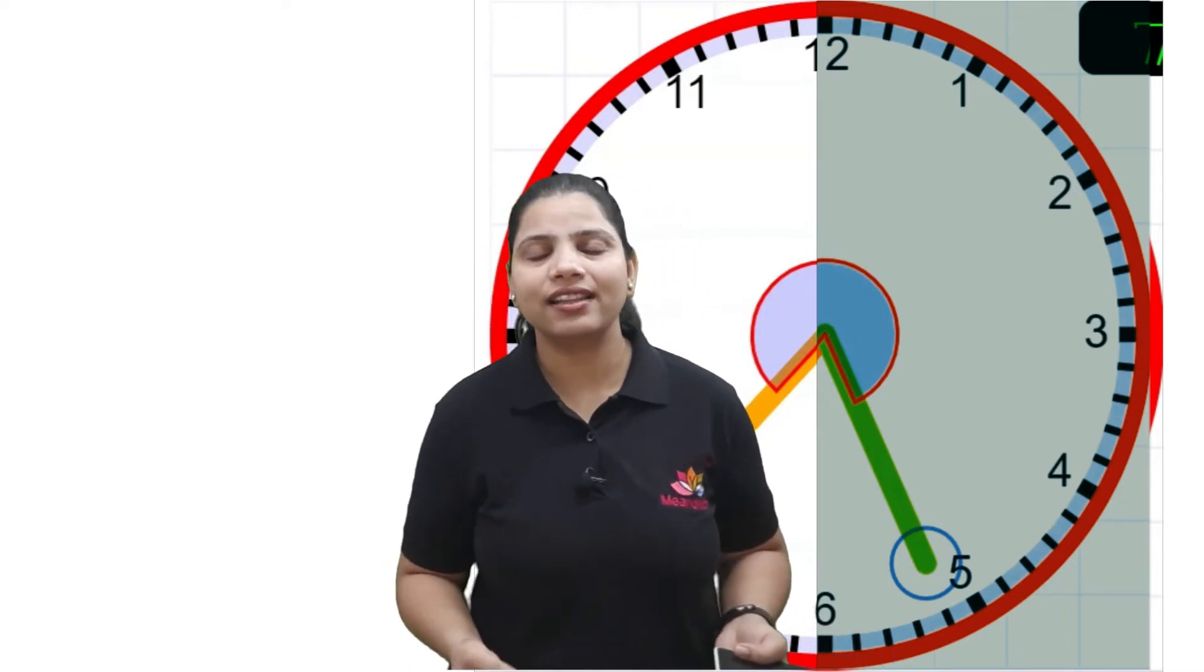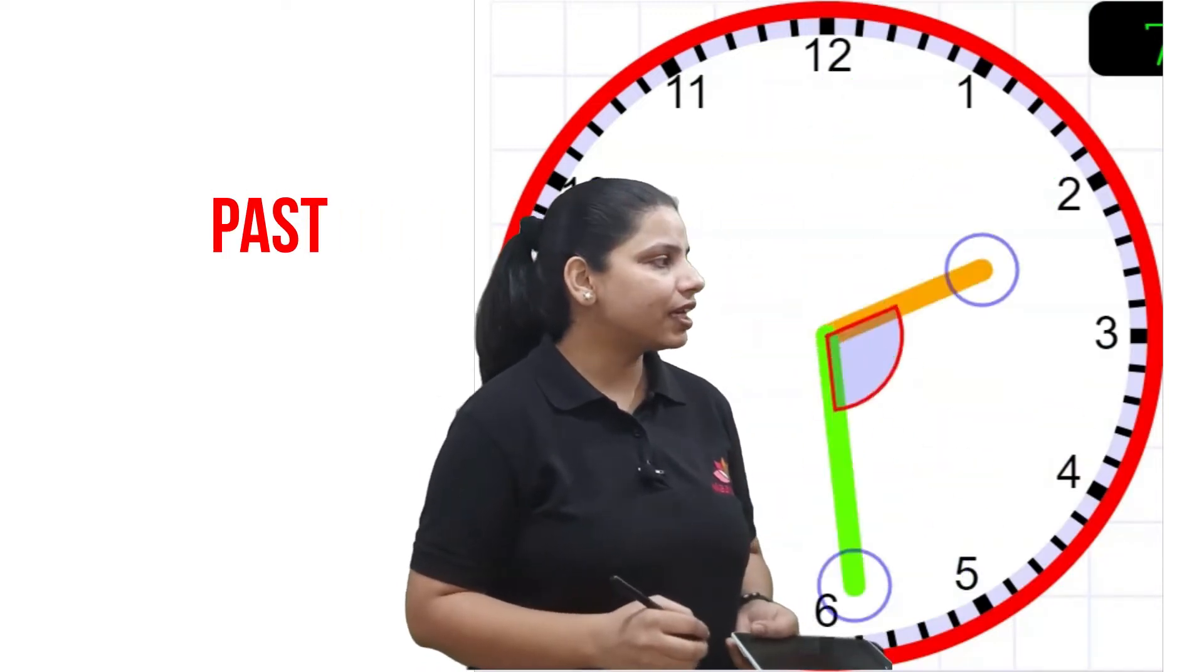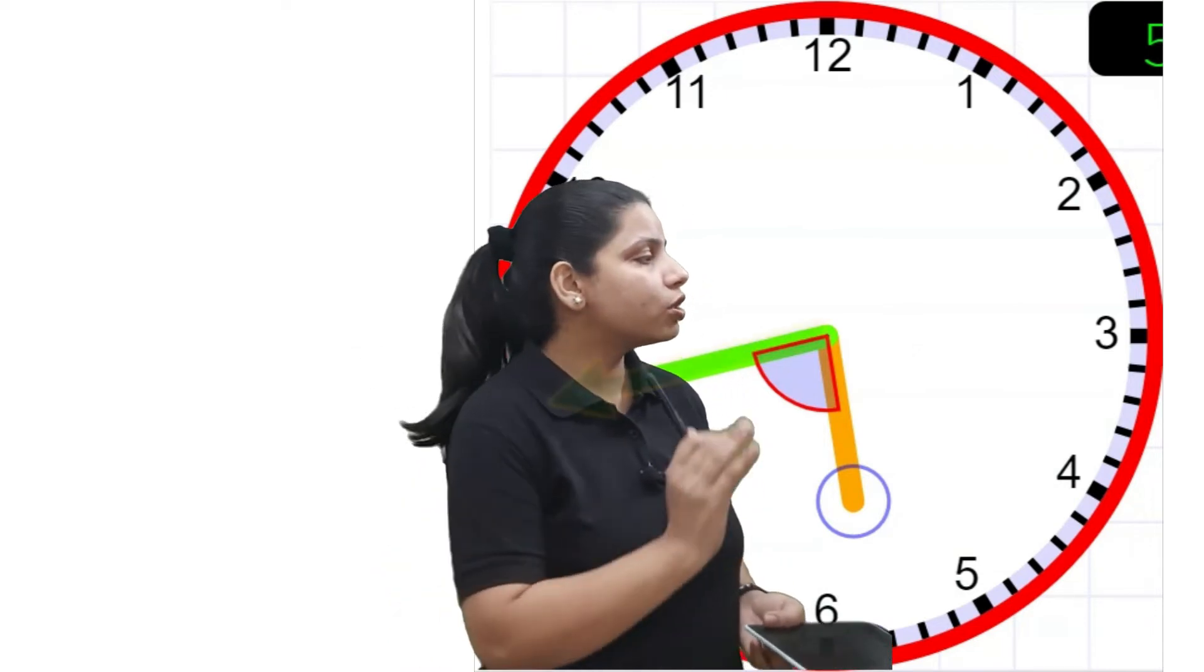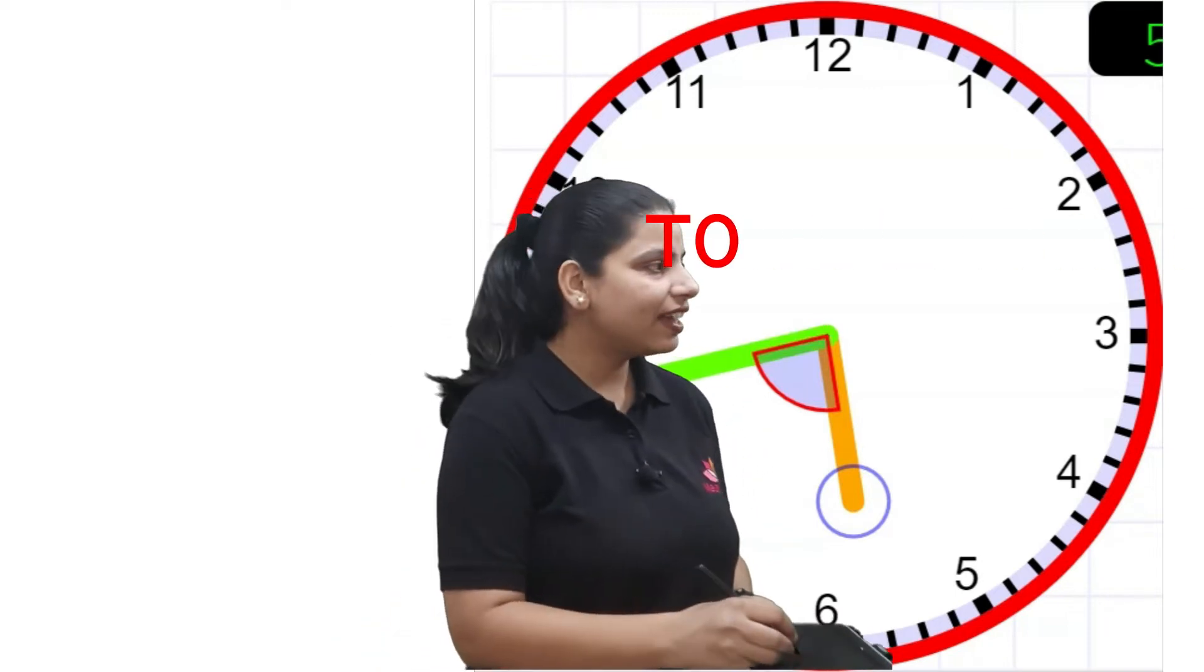Okay, now tell me, stop. Is it past or to? Just focus, which hand you need to focus? We have to focus on minute hand. It's between eight and nine and this is the larger side of the clock, so it's to.